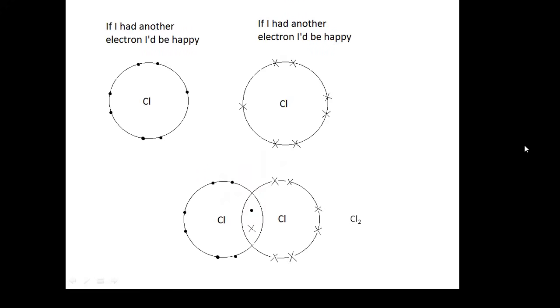So here are two chlorine atoms and they've got seven electrons in their outer shell. They'd rather have eight. So what they do is they get together and they share a couple of electrons. And here is a dot and cross diagram for a chlorine molecule, Cl2. You see the dots are from one atom, the crosses are from another atom and then we have this bond in the middle. And that is a covalent bond.